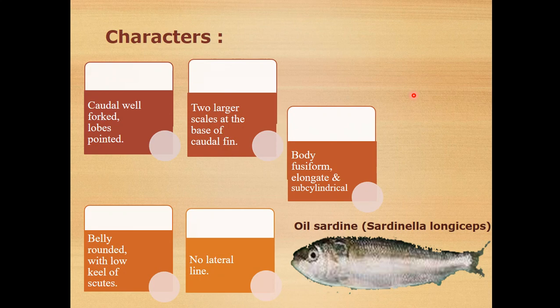About the external characters of oil sardine: there are two large scales at the base of the caudal fin. The caudal fin is well forked, with pointed lobes. The body is fusiform, elongated, and sub-cylindrical. The belly is rounded with a row of scutes. No lateral line is present. It is a bottom feeder fish.